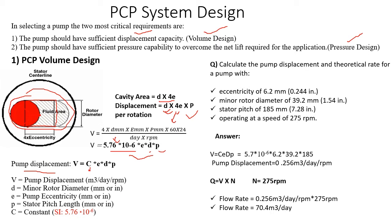If the pump operates at more than one RPM, we multiply the RPM by our volume displacement. For example, if n equals 275 RPM, multiplying 275 by the pump displacement gives the total displacement at that rotational speed. To get the actual flow rate, we multiply the pump displacement by the rotational speed.